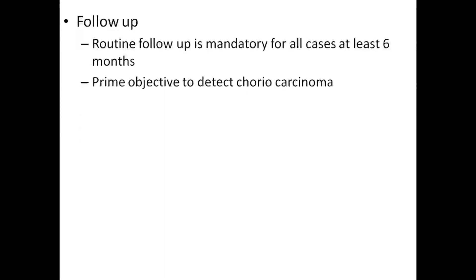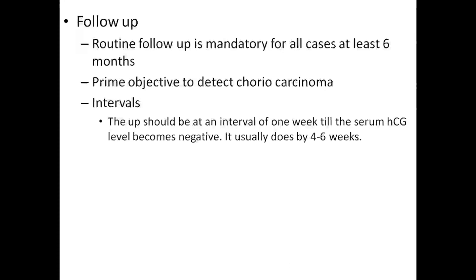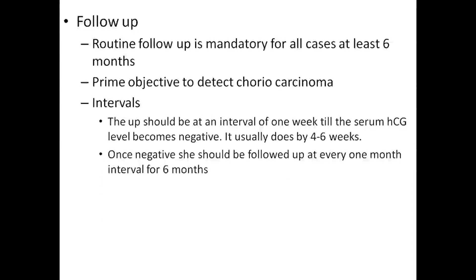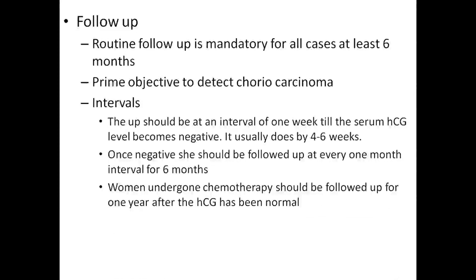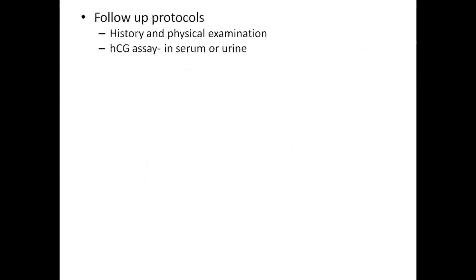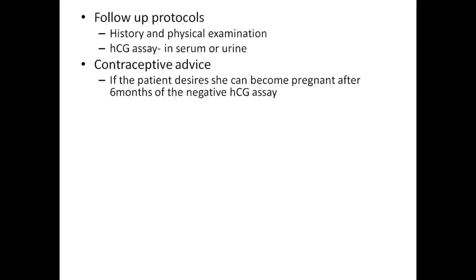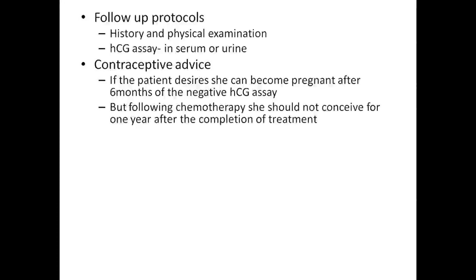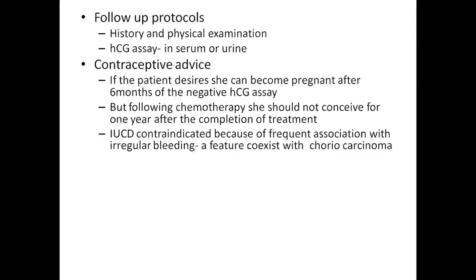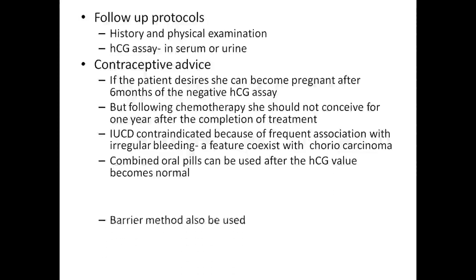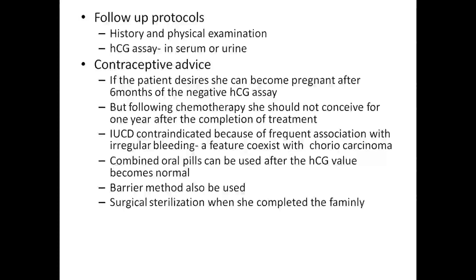Follow-up: routine follow-up is mandatory for all cases for at least 6 months. The prime objective is to detect choriocarcinoma. Follow-up should be at intervals of 1 week until serum HCG becomes negative, which usually takes 4 to 6 weeks. Once negative, she should be followed up every month for 6 months. Women who underwent chemotherapy should be followed up for 1 year after HCG has been normal. Follow-up protocol includes history and physical examination, HCG assay in serum and urine, and contraceptive advice. The patient can become pregnant after 6 months of negative HCG assay, but following chemotherapy she should not conceive for 1 year after completion of treatment. IUCD is contraindicated. Combined oral pills can be used after HCG becomes normal. Barrier method and surgical sterilization if family is complete are also options.